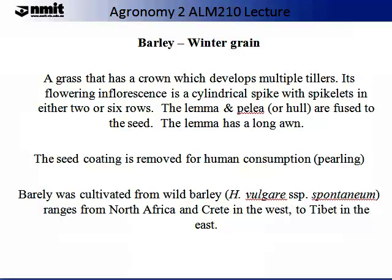Barley is a winter grain. It is a grass that has a crown which develops multiple tillers. Its flowering inflorescence is a syndical spike with spikelets in either two or six rows. The lemma and palea, or hull, are fused to the seed. The lemma has a long awn. The seed coating is removed for human consumption in a process called pearling. Barley was cultivated from wild barley which ranges from North Africa and Crete in the west to Tibet in the east.